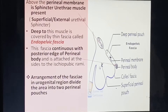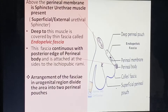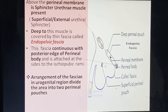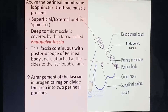The arrangement of fascia in the urogenital region divides the area into two pouches. Below the perineal membrane is the superficial perineal pouch, and between the endopelvic fascia and the perineal membrane is the deep perineal pouch.